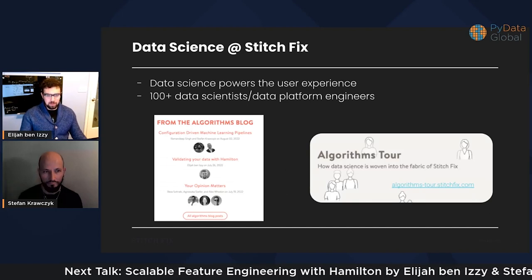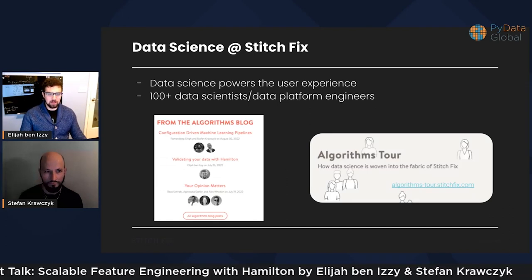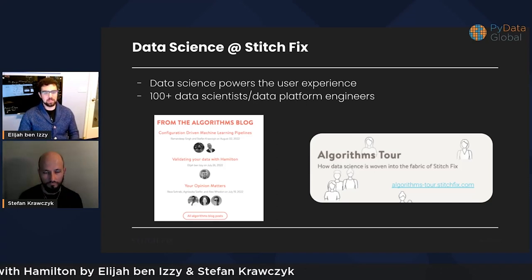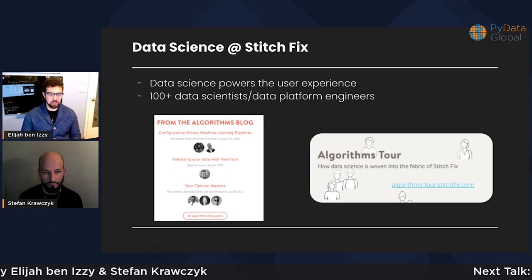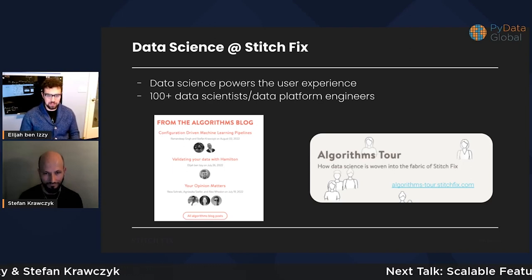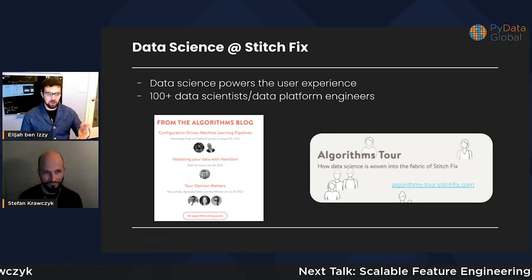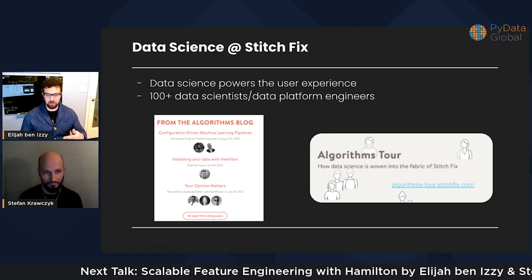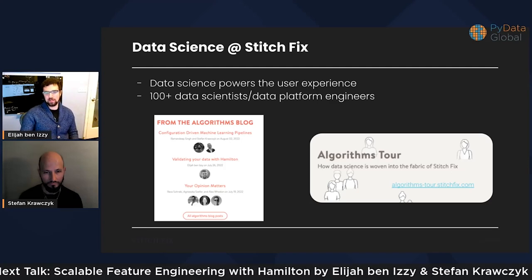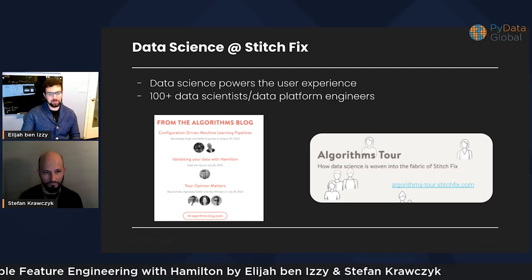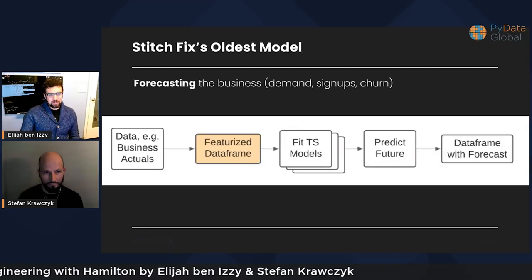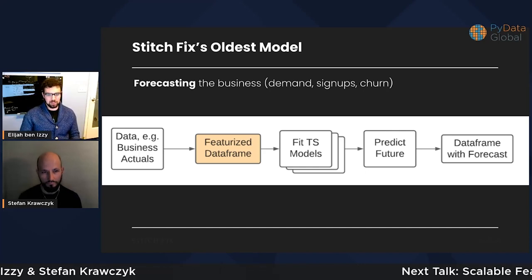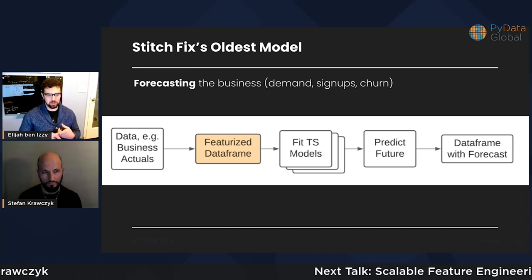Data science powers the user experience, and as such we have 100-plus data scientists and data platform engineers building out this offering at Stitch Fix. You can follow the blog — it's called Multithreaded, a cute little pun. There's also an algorithms tour that shows how algorithms are woven into the fabric of Stitch Fix. I want to talk about Stitch Fix's oldest model, which is the model responsible for forecasting the business — forecasting demand, signups, and churn.